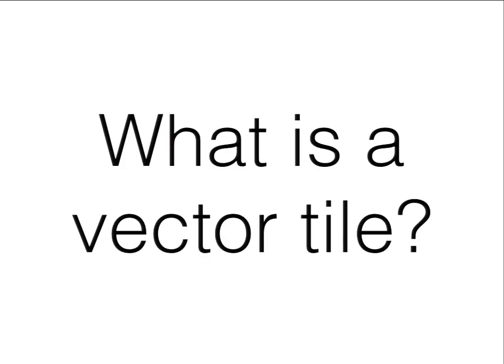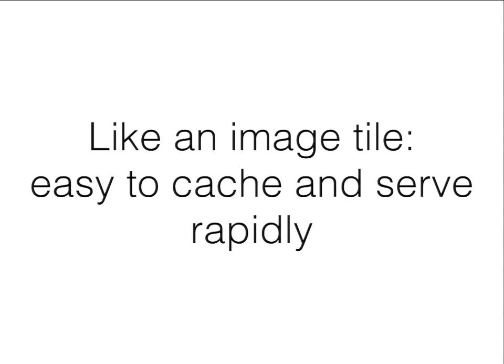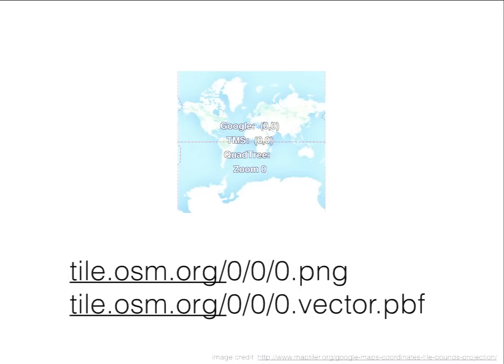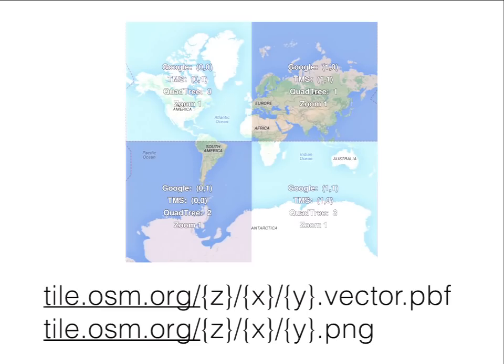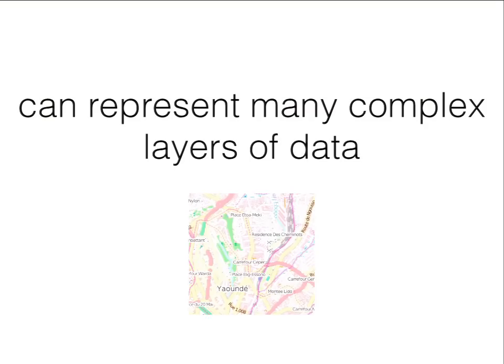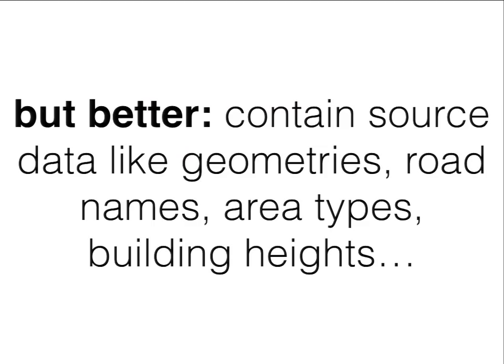So now — what is a vector tile? It's just the same as an image tile: easy to cache and serve. It uses the same addressing scheme as image tiles, so you can refer to 0/0/0.png the same as 0/0/0.vector.pbf to get all the data for the world at that zoom level or any zoom level. You can represent many complex layers inside of the vector tile. The difference is vector tiles contain the source data — geometries, road names, area types, building heights, whatever vector data you can dream up putting in there.